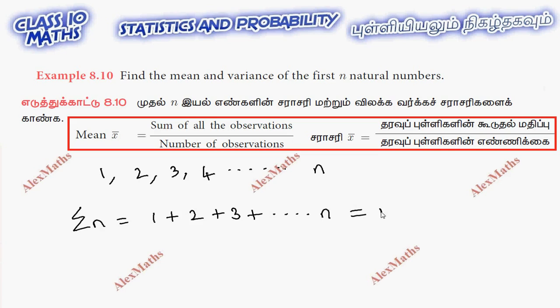The formula is n into n plus 1 by 2. Substitute into the mean formula: sum is n into n plus 1 by 2, divided by number of observations, which is n.